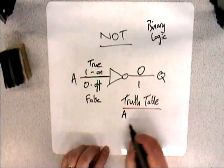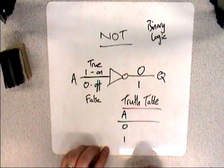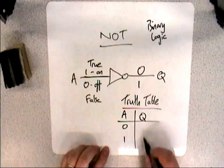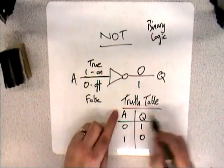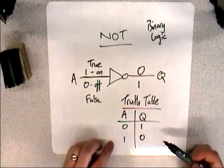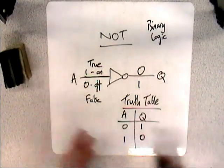So there are two possible inputs for A, zero and one. And that means there are two possible outputs for Q, and they're the opposite, one and zero. And being able to draw the truth table is really important because it shows you understand what's going on.